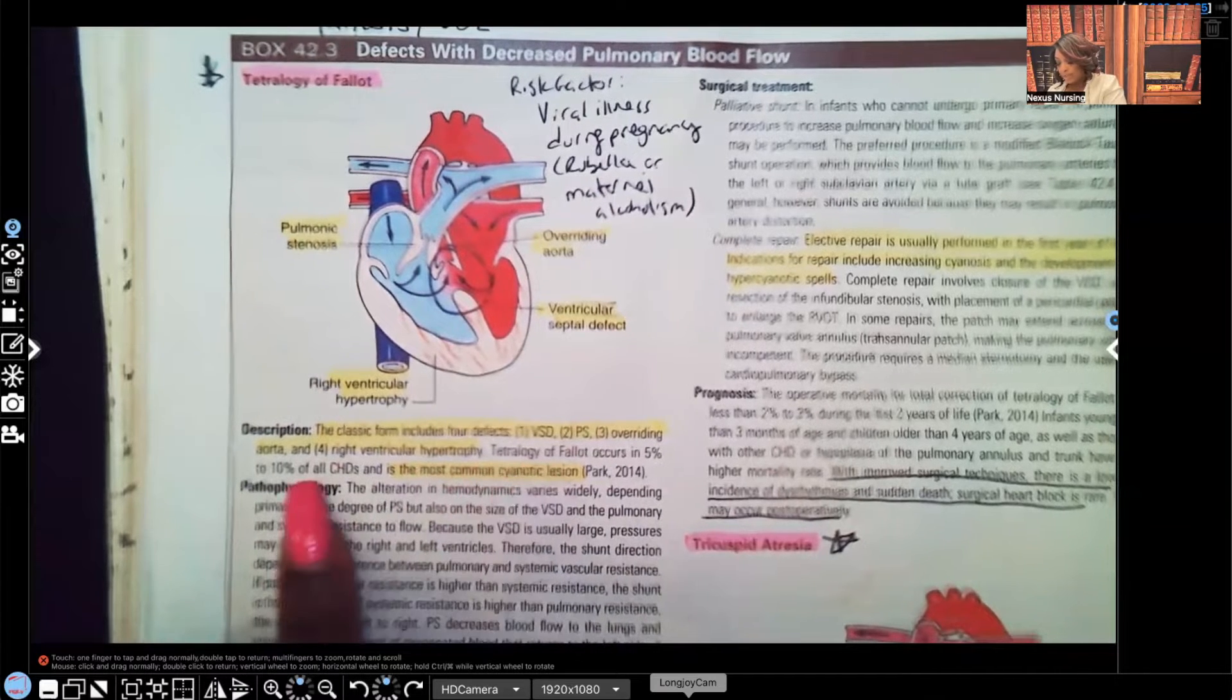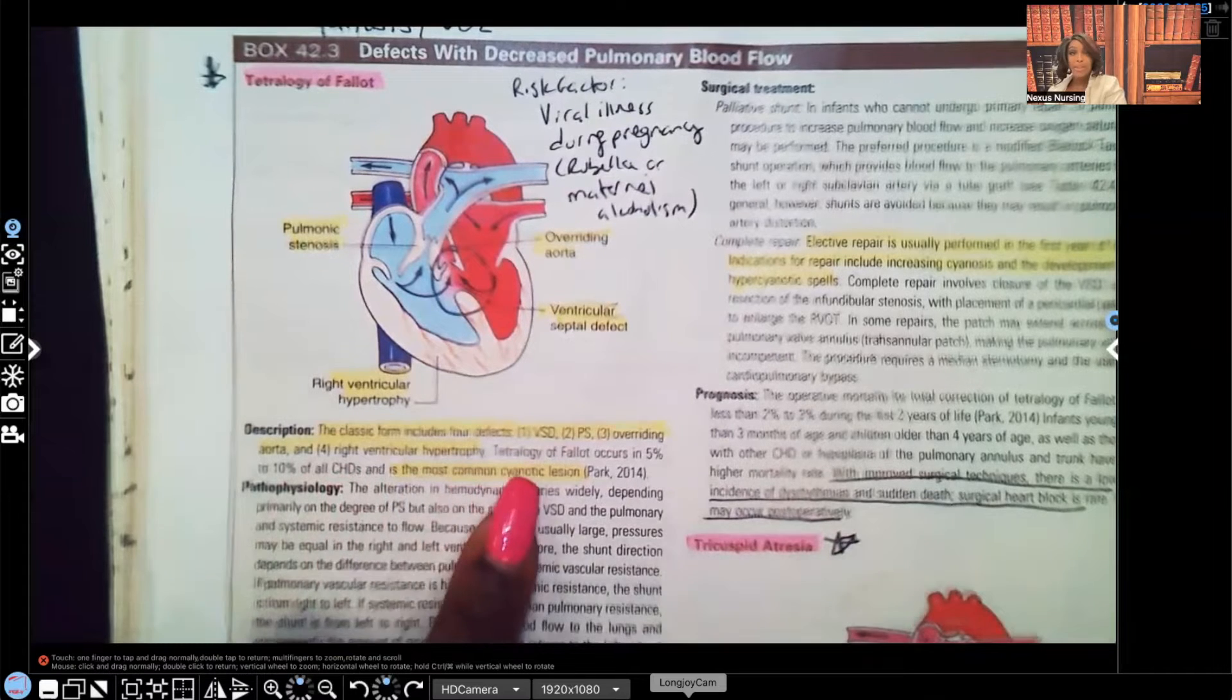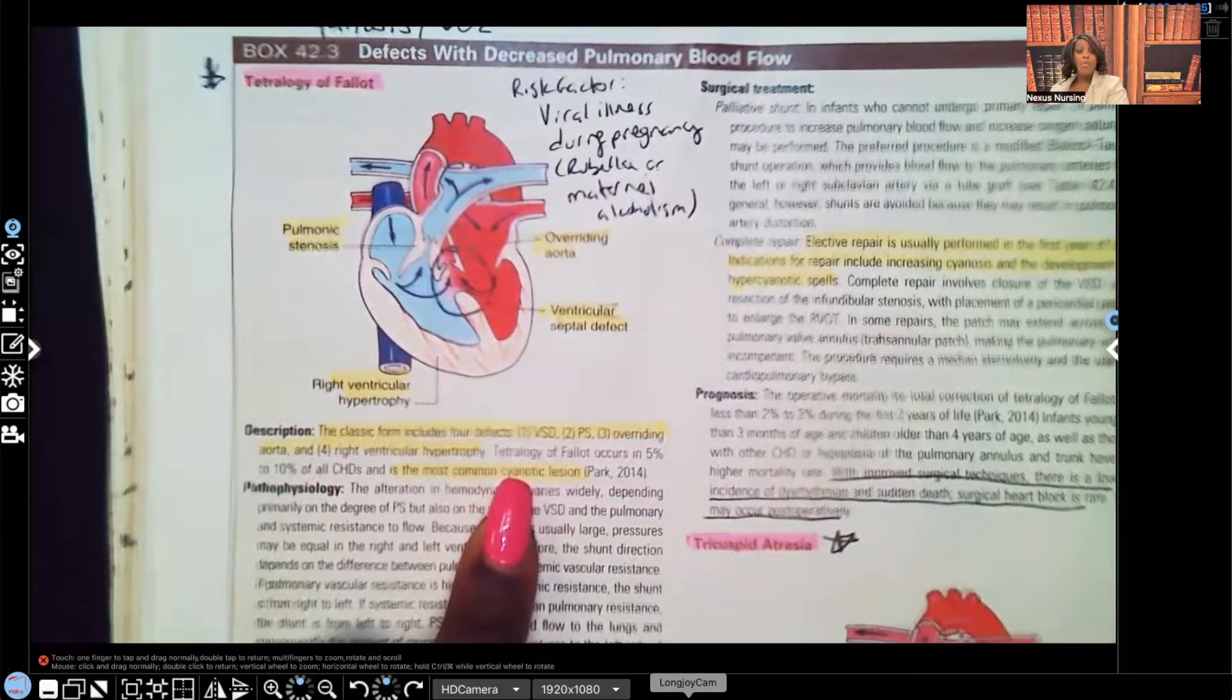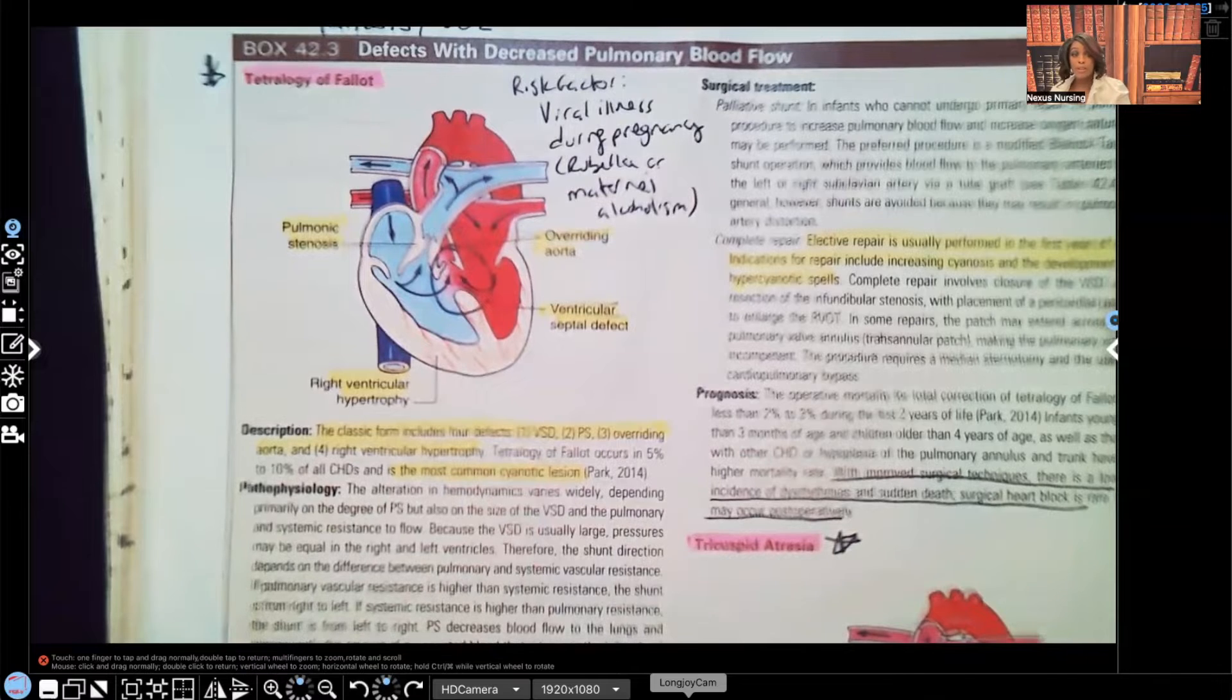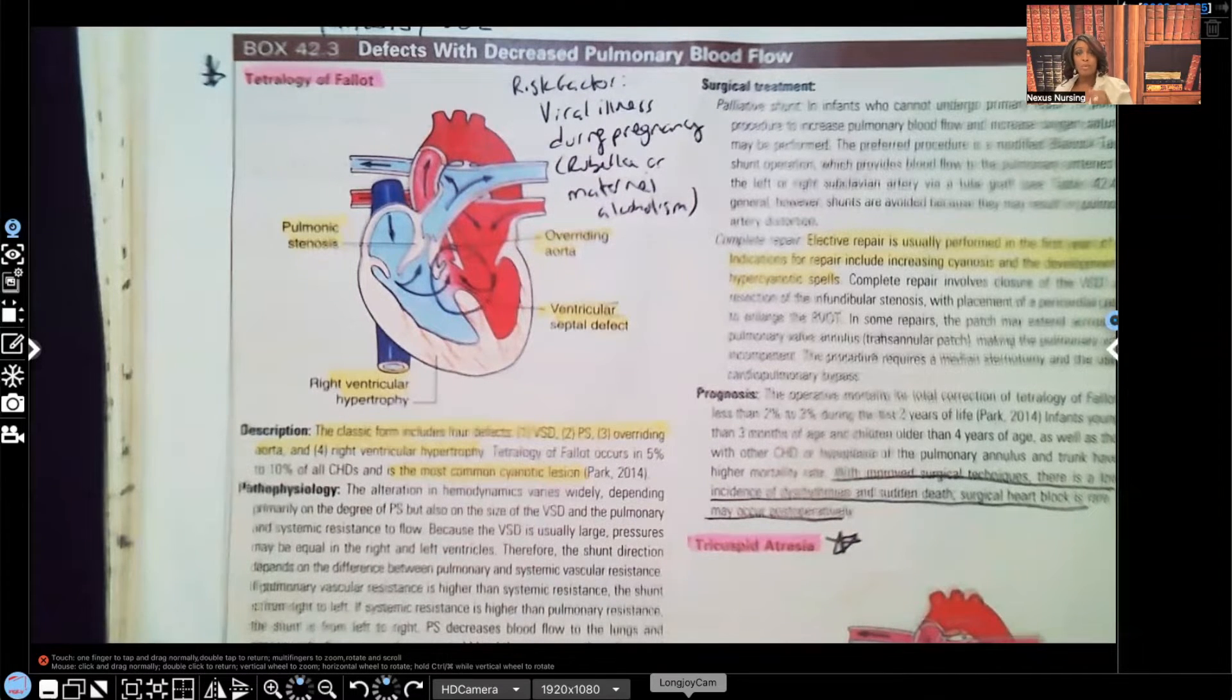It occurs in 5% to 10% of all congestive heart disease and is the most common cyanotic lesion. It's absolutely important that you understand when it comes to Tetralogy of Fallot that this is a cyanotic disorder. We expect to see that patient turning blue because of that decreased oxygen in the blood.